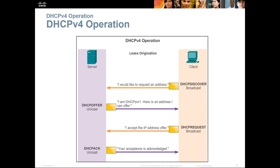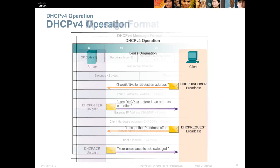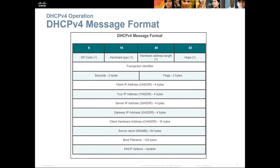That's how the client gets its address — two exchanges from both sides. The DHCP message format includes a traditional header, client IP address, your IP address, server IP address, gateway address, client hardware address, server name, boot file name, and DHCP options. The packet will contain the Ethernet frame with source and destination MAC addresses, source and destination IP addresses, and the appropriate UDP datagram with all the relevant information.